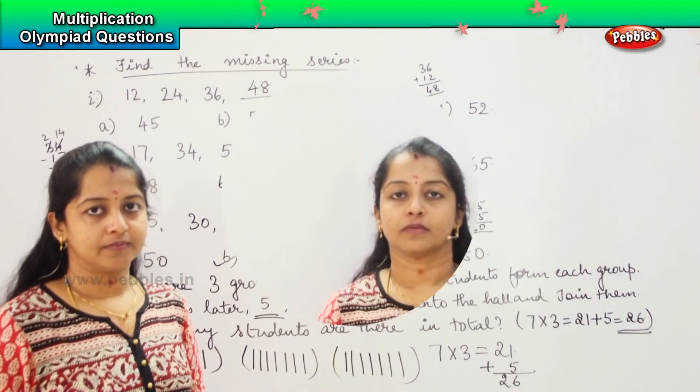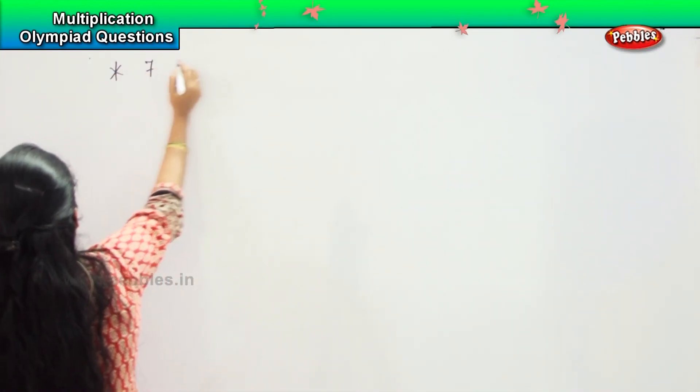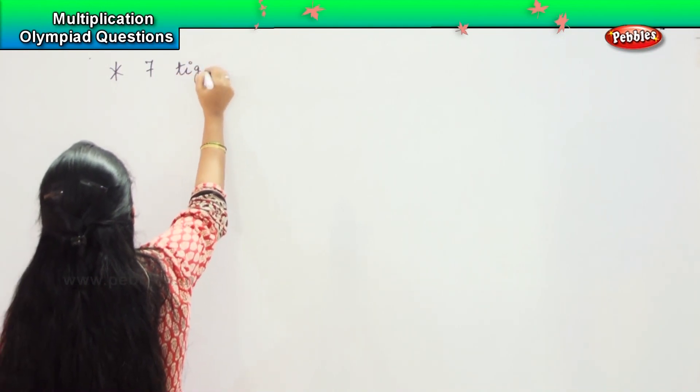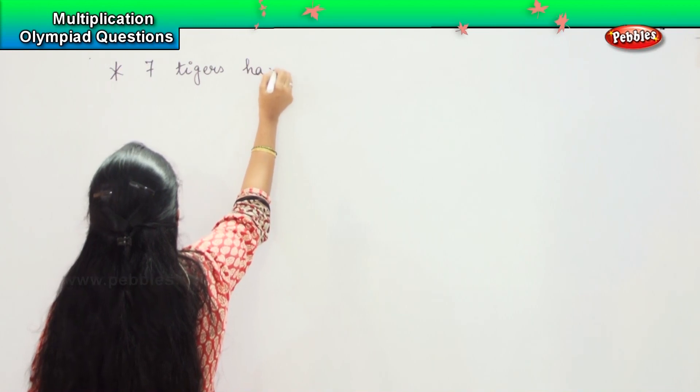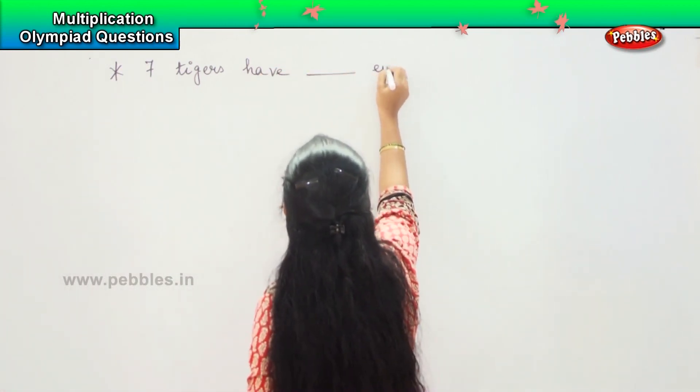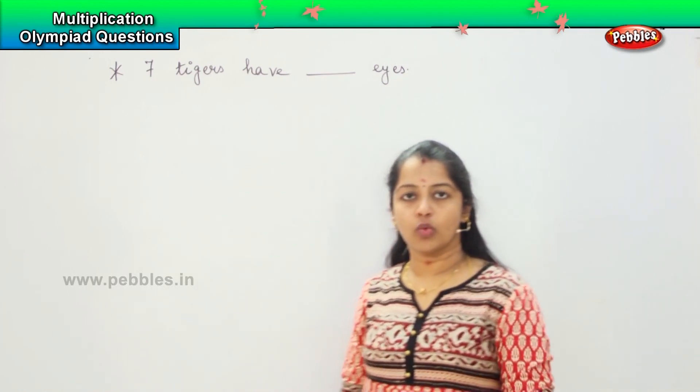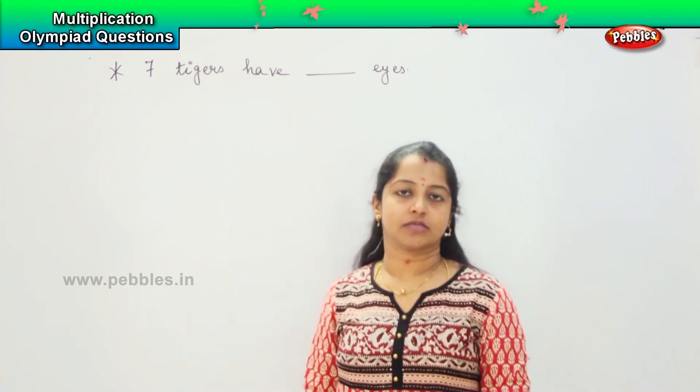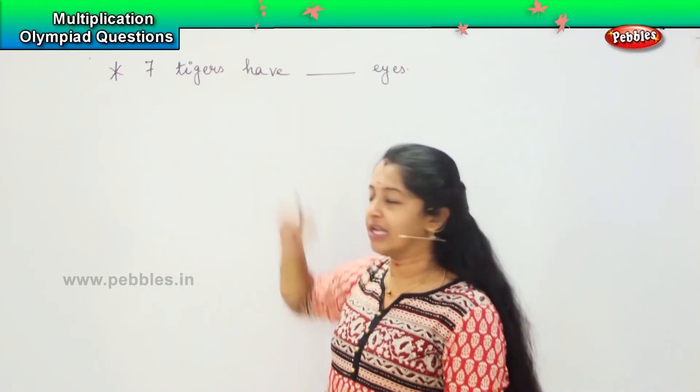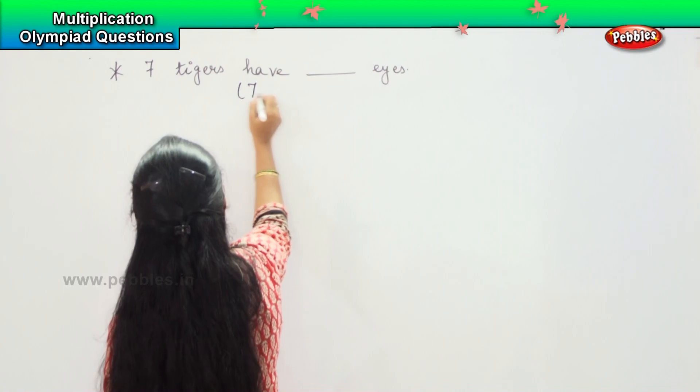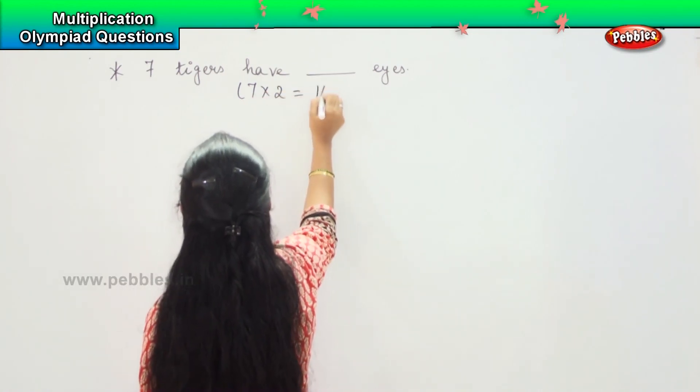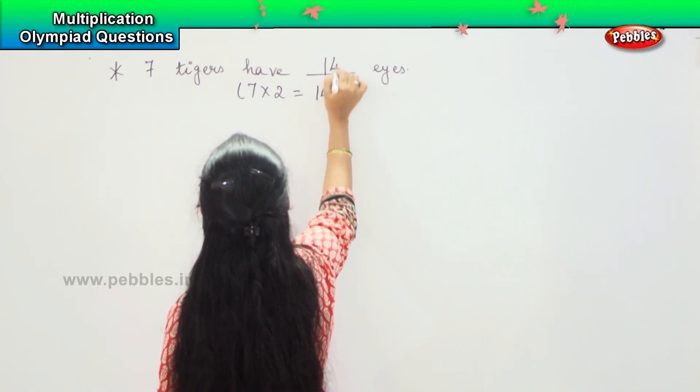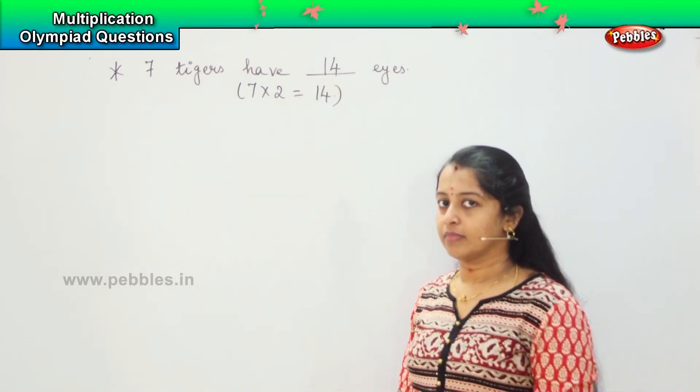Shall we solve some more? Now I am going to give you a few mental math questions. Let me see how quick we are able to solve them. Your first question here is 7 tigers have dash eyes. How will you solve it? How many eyes does a person have? 2. Very good. So 7 into 2 equals 14. So how many eyes? 14 eyes. Got it?